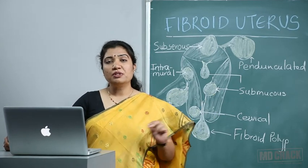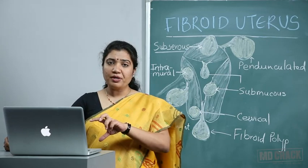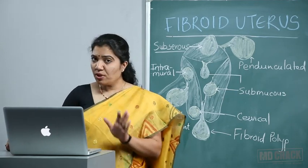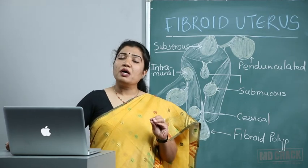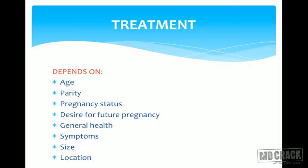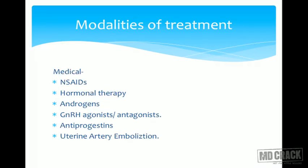Sometimes ultrasound reports show two or five millimeter fibroids in bold print and the patient gets anxious. But if there are no symptoms and fibroids are smaller in size, no treatment is needed. Treatment also depends on the size and location of the fibroid. Modalities include medical management and surgical management. Medically we can give NSAIDs, hormonal therapy, androgens, GnRH agonists and antagonists, antiprogestins, and uterine artery embolization is also coming up in a big way.